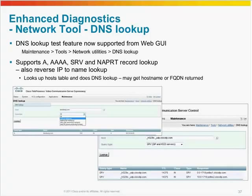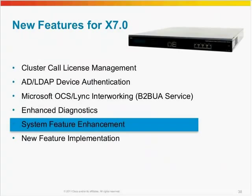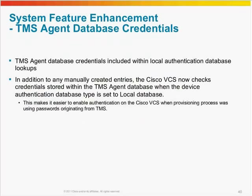Next is system feature enhancements. You can now override the global call signaling routed mode configuration per neighbor zone to force call signaling over the zone. This is a very useful configuration, for instance for Call Manager deployments, where you want to route call signaling in a specific path — for instance to overcome problems with certificates when using TLS. If you are using a local database as your main authentication source, the VCS will now also do a lookup in the TMS agent database if the credential is not found in the local database. This makes it easier to enable authentication on the VCS when provisioning is enabled alongside other authentication methods.